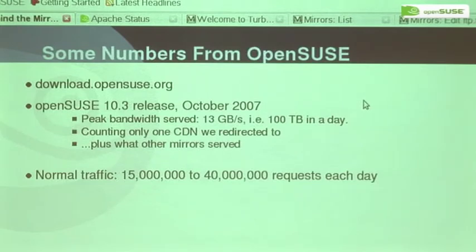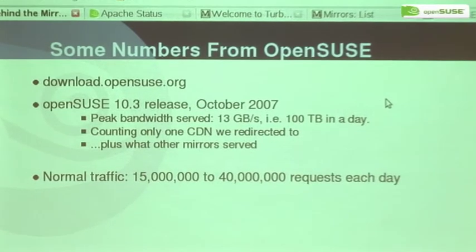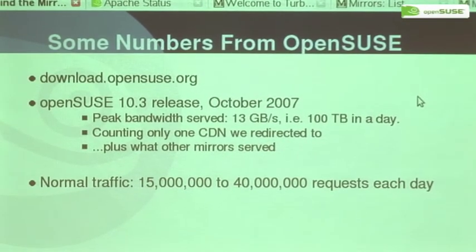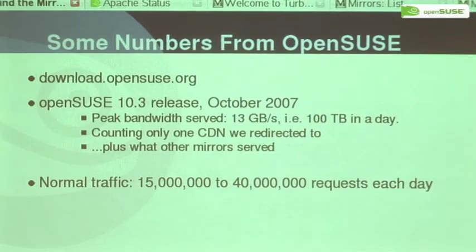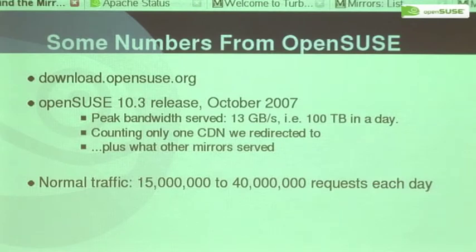To give you some numbers: download.opensuse.org, which served our last product release in autumn of last year, peaked at 13 GB per second of delivered content to clients — and that was only the content redirected to the content sharing network; what we redirected to mirrors is not even counted here. We have several million requests each day.